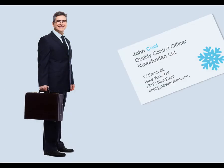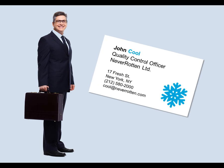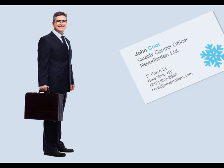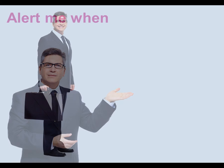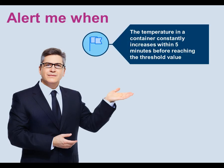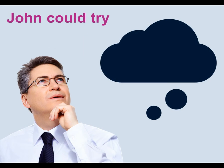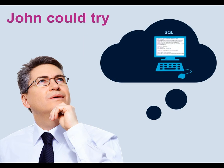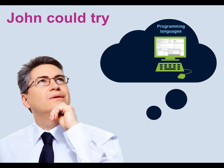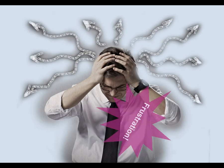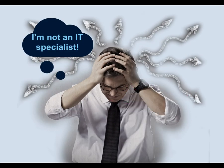This is John Kuhl, Quality Control Officer at Neverrott Unlimited. He's in charge of setting control policies for the online monitoring of the company's cold chain products. Right now, John wants to define two main policy rules: alert me when the temperature in a container constantly increases within 5 minutes before reaching the threshold value, and alert me whenever a delay longer than permitted occurs. The alternatives currently available to John are not simple — he can apply SQL queries to store data, embed the event-driven logic into workflows, or buy a dedicated event-driven tool. This situation is very frustrating for John because he's not an IT specialist and he can't implement the two rules by himself.